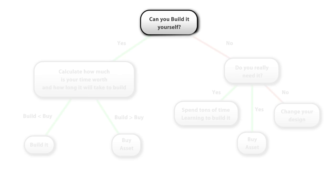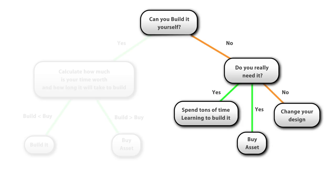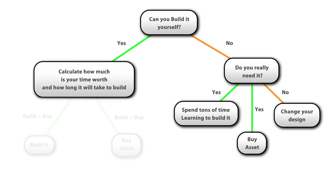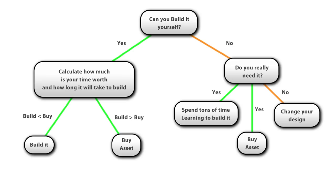So when it comes to assets, it really is a very simple decision matrix. First ask yourself: can you build it yourself? If not, do you really need it for your game? If so, then buy an asset, or spend thousands of hours learning that skill set. If you can build it yourself, calculate how much your time is worth and how long it will take you to build. Is the cost less than the asset? If so, then build it. Is it a lot more? If so, then just buy the asset. It really is that simple.